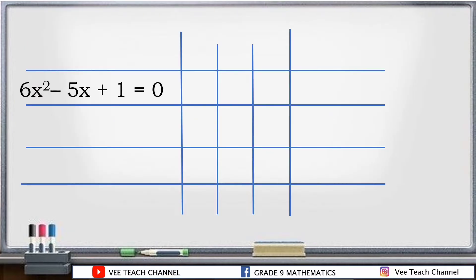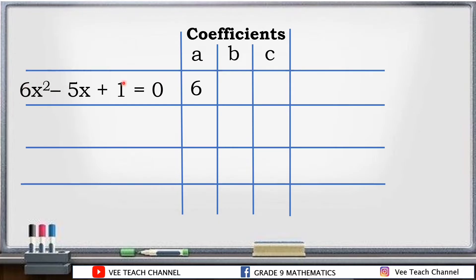Let's have a recall about coefficients. Let's say we have the equation 6x squared minus 5x plus 1 is equal to 0. We have coefficients a, b, and c. The coefficient a is 6, found on the quadratic term or x squared term. Our b is negative 5, and our c is the constant term, which is 1.